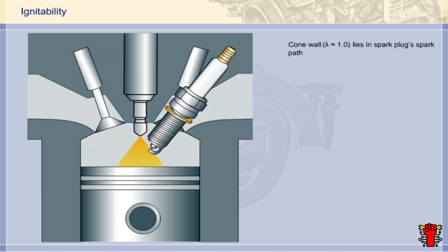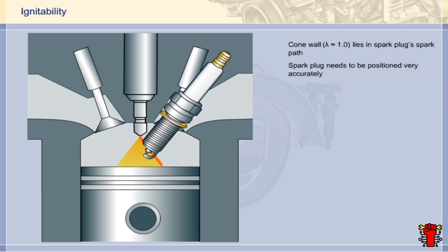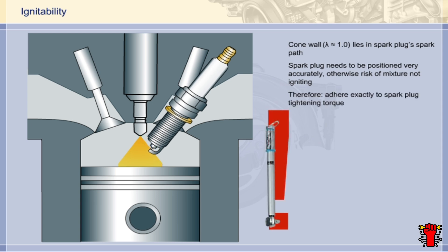Maximum ignitability is ensured by the fact that the wall of the conical cloud — where lambda is around 1 — lies directly in the path of the spark from the spark plug. With the spray-guided combustion process it is therefore important that the spark plug is positioned exactly: the overhead electrode must have a precisely defined position with respect to the conical spray. If the spark plug is slightly too high, the spark will be outside the spray cone and will not contact the mixture. If it is too low and protrudes into the lean layers of the spray cone, there is likewise no guarantee of ignition. As a result, it is particularly vital that the tightening torque for the spark plugs of the DE engine is adhered to exactly.